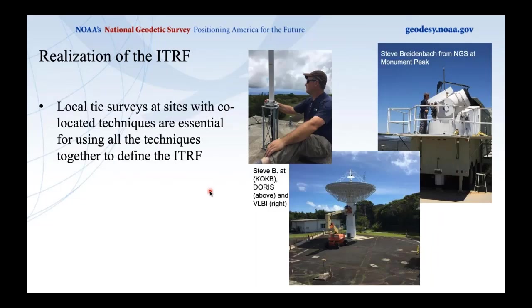A quick note on co-location: because VLBI, SLR, DORIS, and GNSS all measure different things, it's critical to have sites where these techniques are co-located. NGS field crews go out and measure the offsets between the physical reference points held by each instrument at these sites — called local ties — so observations can be tied together during ITRF realization. NGS field crews are internationally recognized as among the best at performing these local tie surveys.